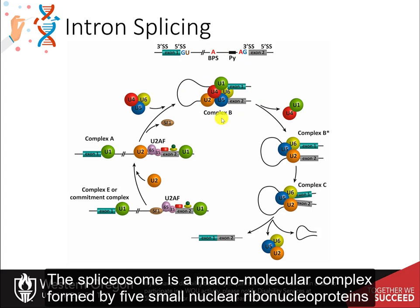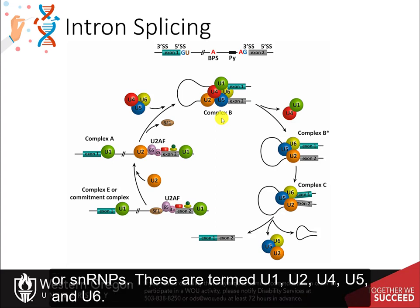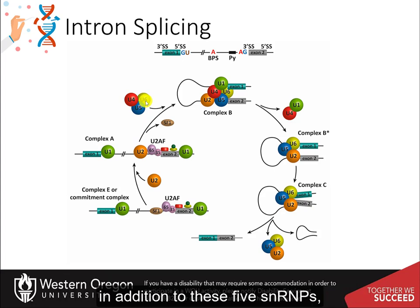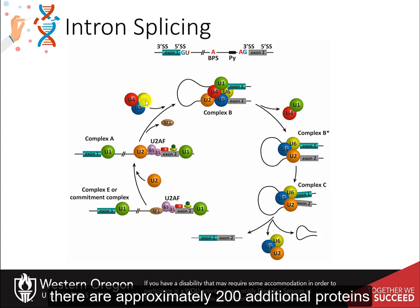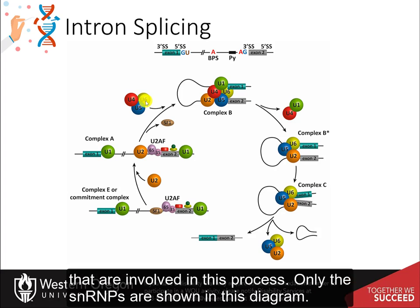The spliceosome is a macromolecular complex formed by five small nuclear ribonucleoproteins, or SNRNPs, termed U1, U2, U4, U5, and U6. In addition to these five SNRNPs, there are approximately 200 additional proteins involved in this process. Only the SNRNPs are shown in this diagram.